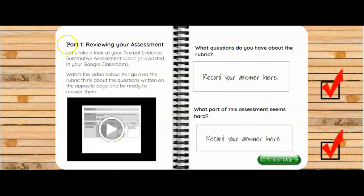So part one, reviewing your assessment. In this part, you're just going to take a look at your textual evidence summative assessment rubric. It's posted in Google Classroom. And I've also made a video right here that walks you through the rubric. So watch this video, and then you're going to respond to these questions: What questions do you have about the rubric? And what part do you think is going to be most challenging or hard?